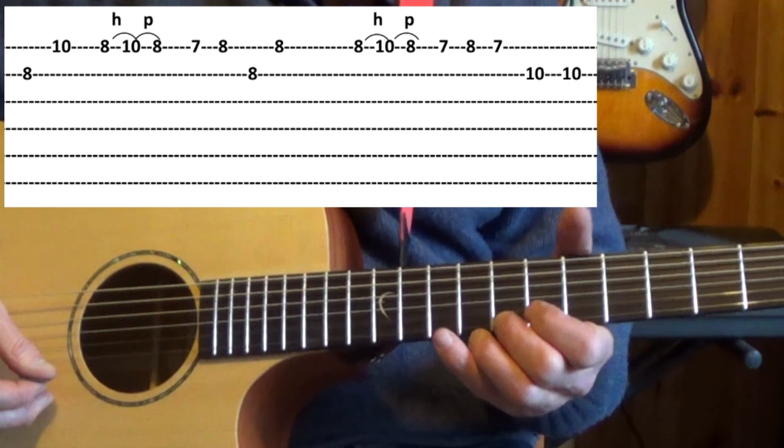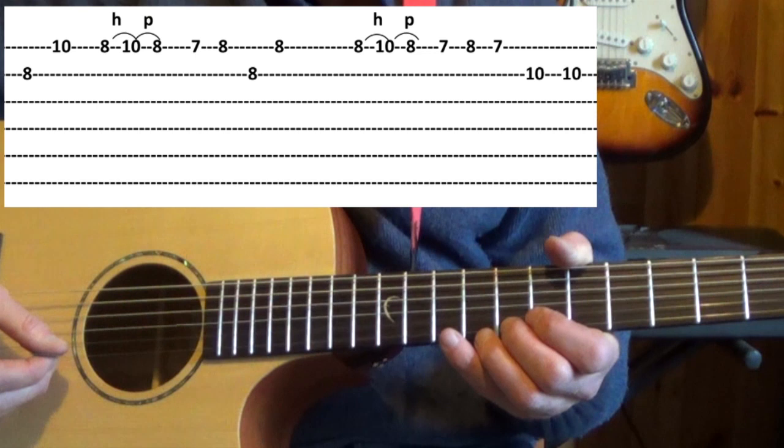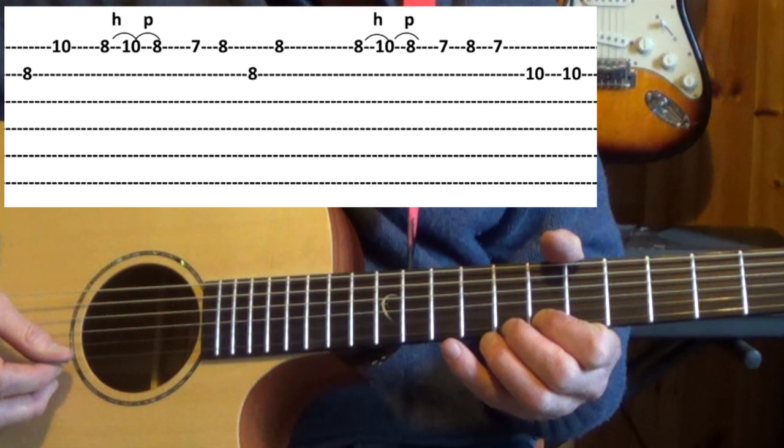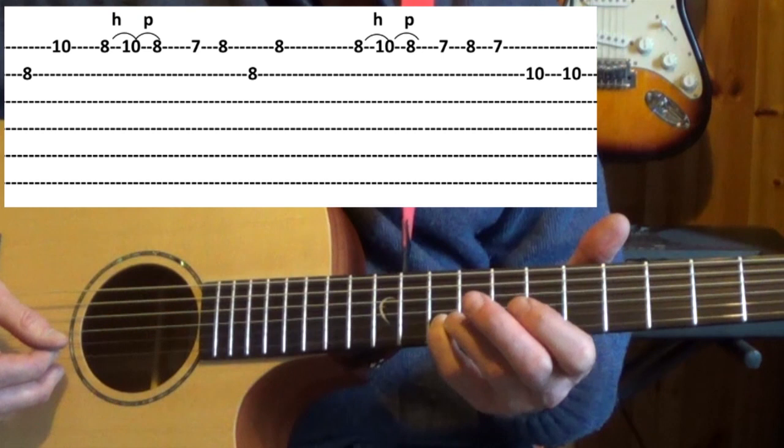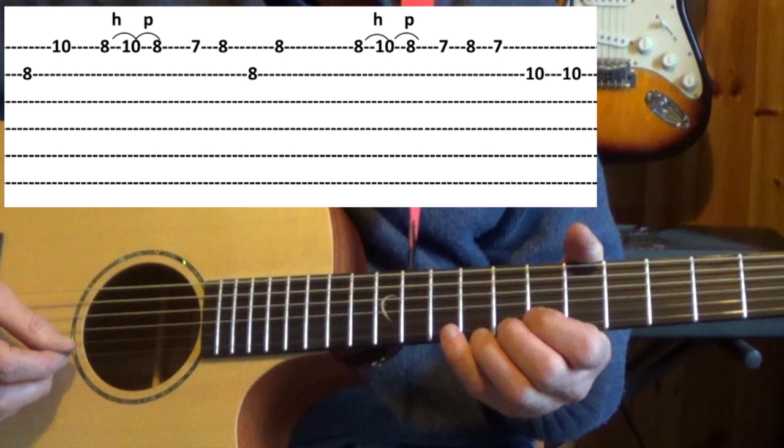From there we have another hammer-on, the very same hammer-on again, light hammer-on from eight to ten back to eight. Then seven, eight, seven, seventh fret, eighth fret, seventh fret second string, tenth fret. So those last few notes.